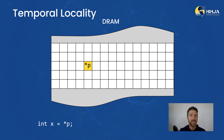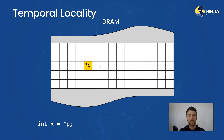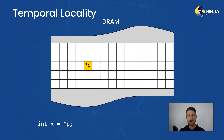So that's temporal locality. Typical techniques to exploit temporal locality involve splitting the working set into smaller chunks and working on it so that it fits in the cache, and only then moving to the next chunk.